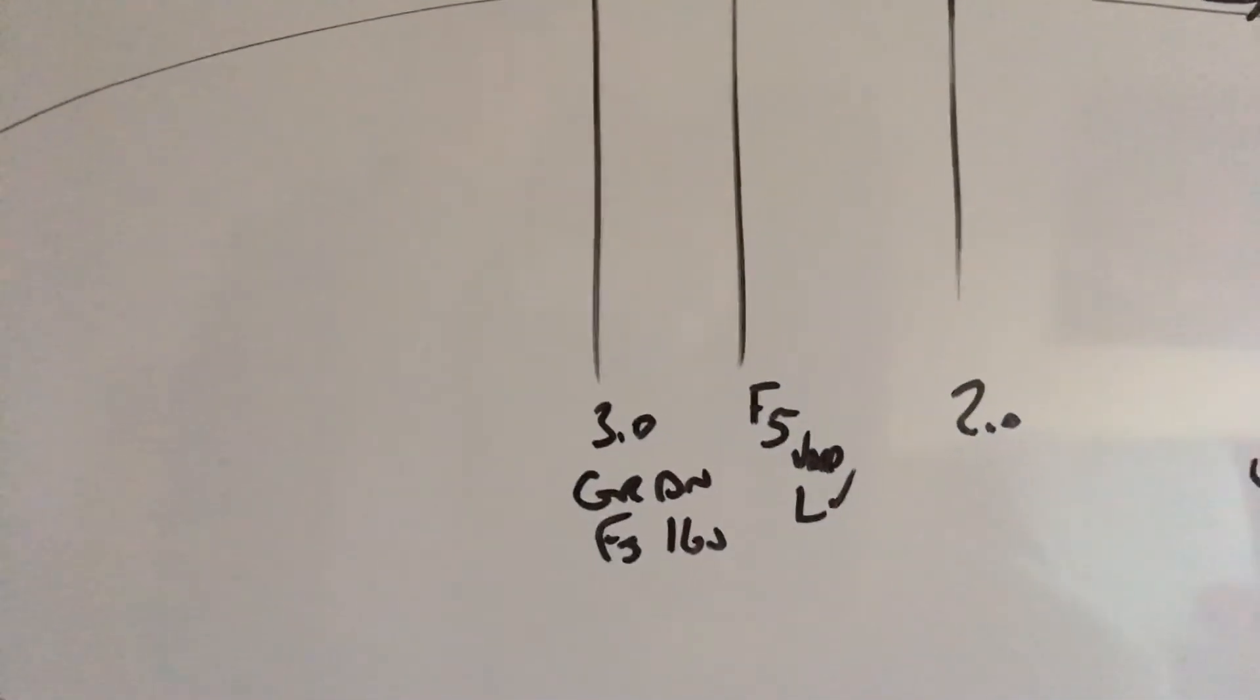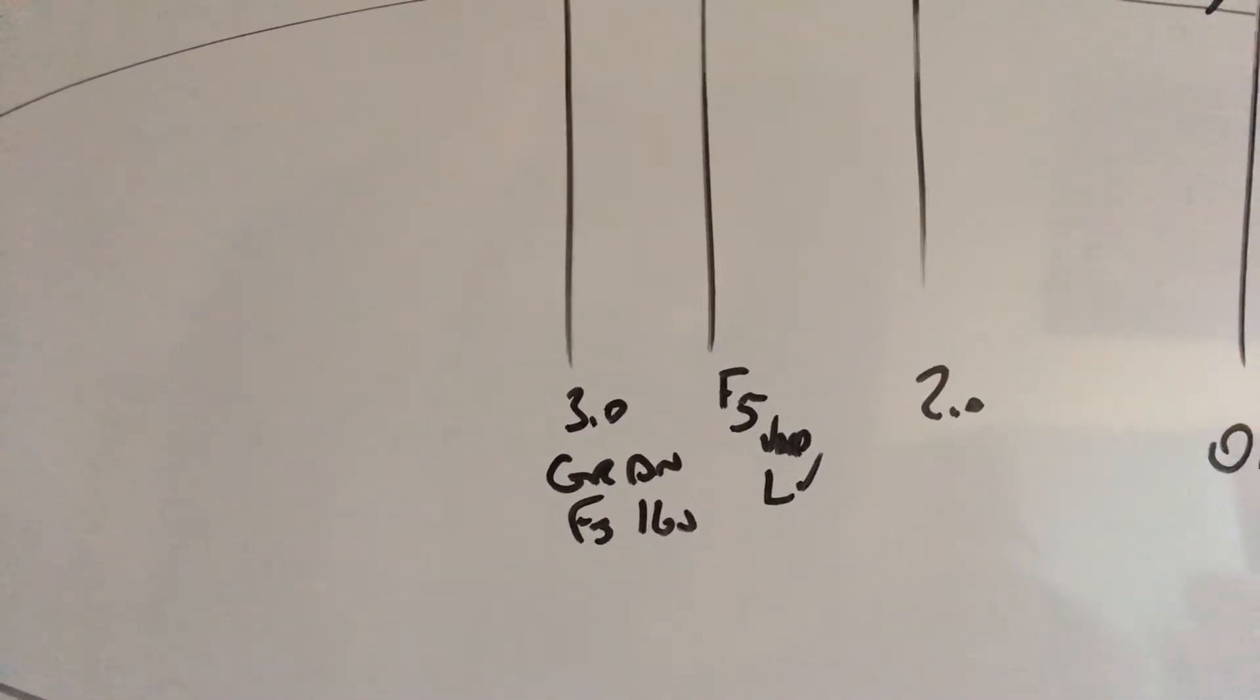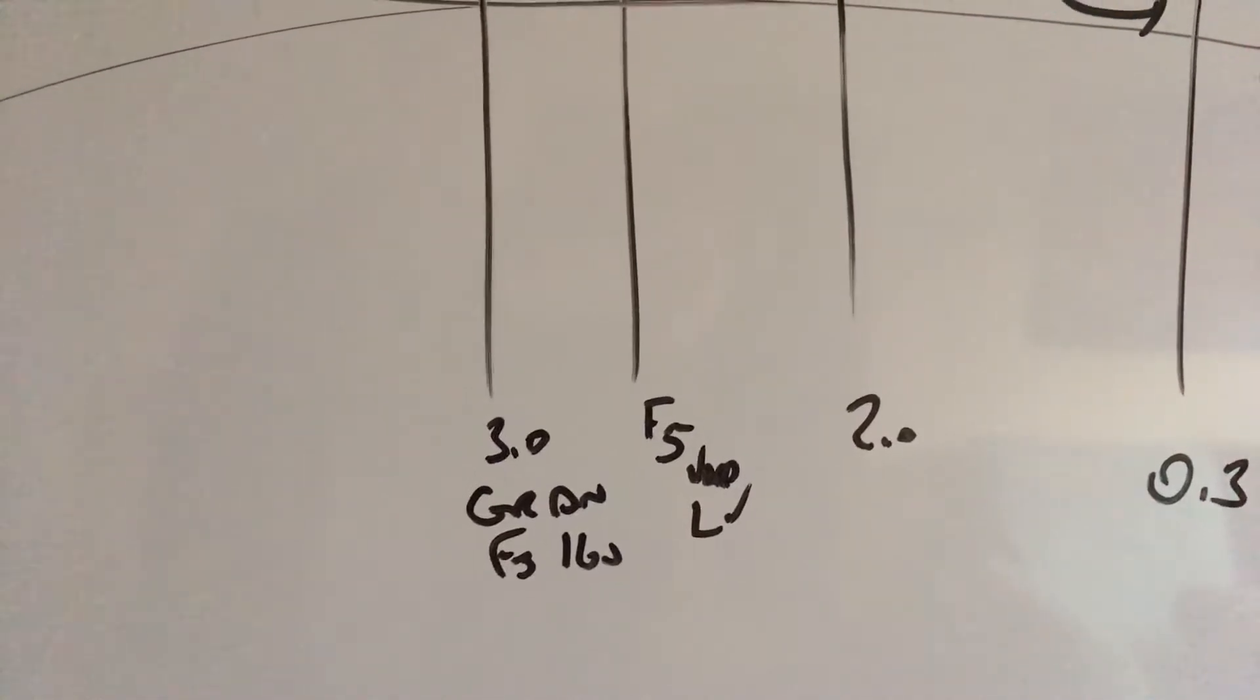Roughly three miles out from the final approach fix, gear down, flaps 3, bug 160, then flaps 5, V approach, landing checklist.